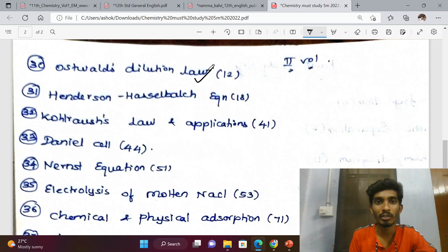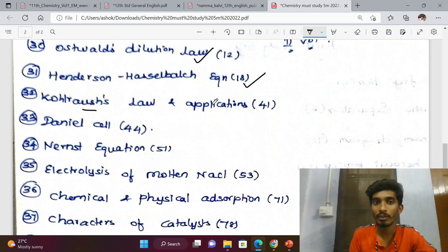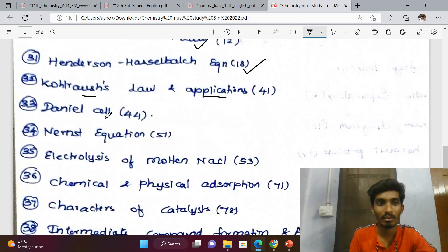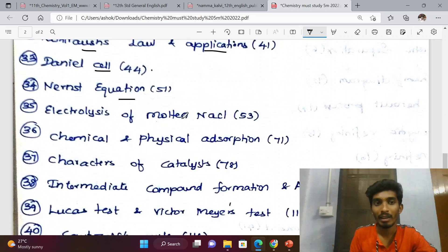Ostwald dilution law, Henderson-Hasselbalch equation, Kohlrausch's law and its application, Daniel cell, Nernst equation, electrolysis of molten NaCl - all possible 5-mark questions.